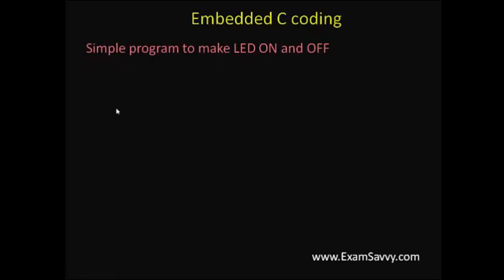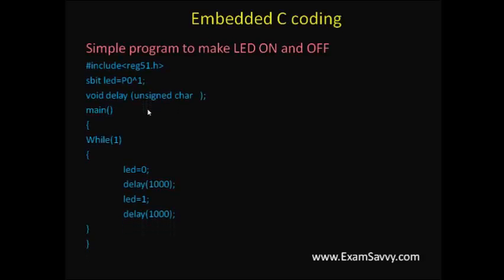Simple embedded coding for this video is, I have taken how LED is made on and off continuously. The first line hash includes register 51.h. It represents all SFR special function register related addresses are present in this header file. Here all SFR special function register addresses are present in this header file. Here I have taken LED as a single data type. So SBIT. I have preferred SBIT. SBIT is one of the data types. If you are going for single bit, then I have connected to port zero.